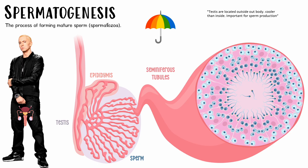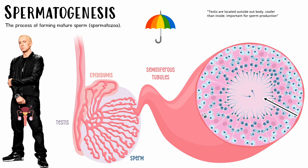Spermatozoa is the final, most mature sperm — the one we all recognize. So spermatogenesis is the process of forming these mature sperm, the spermatozoa. You can see that sperm develop from the outer layer towards the lumen of the seminiferous tubule. All the most outer cells are the youngest baby stem cells, and each successive layer inward is more developed, until the final innermost layer — the most developed, final stage of sperm.